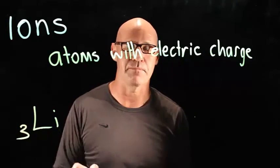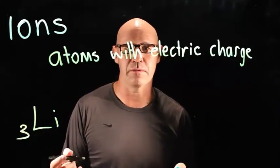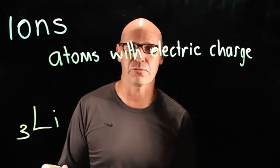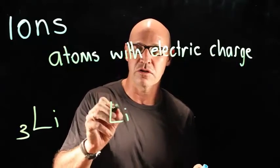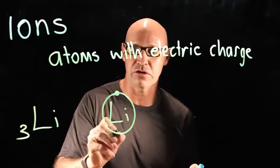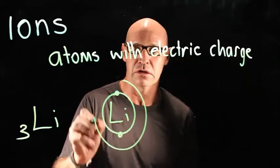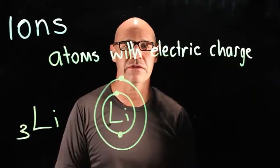Here's lithium. Lithium has three protons and therefore it's also got three electrons. Show the Bohr diagram. It's got two electrons in its inner shell and one electron in its outer shell.